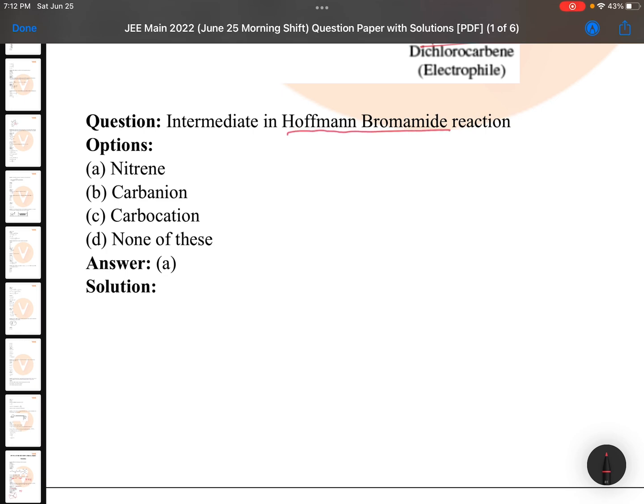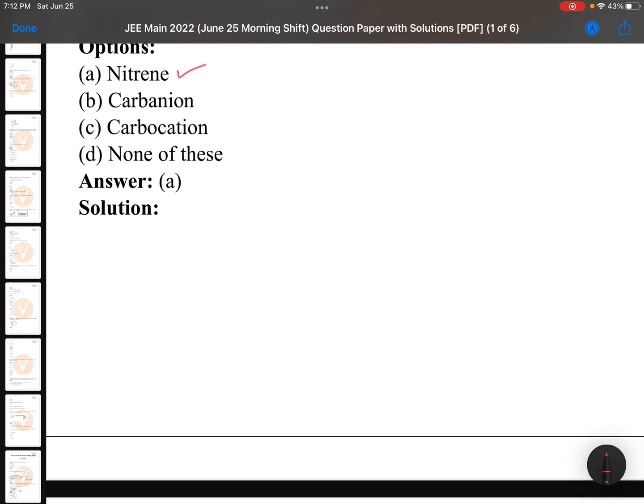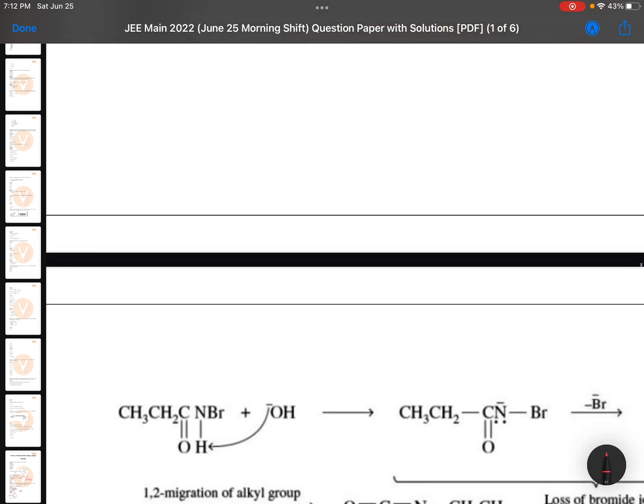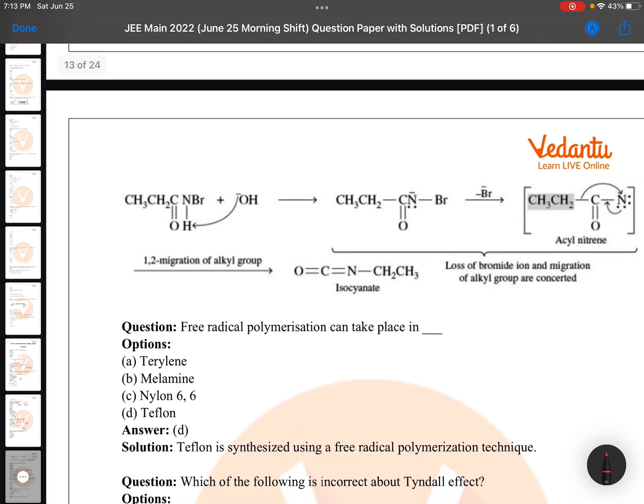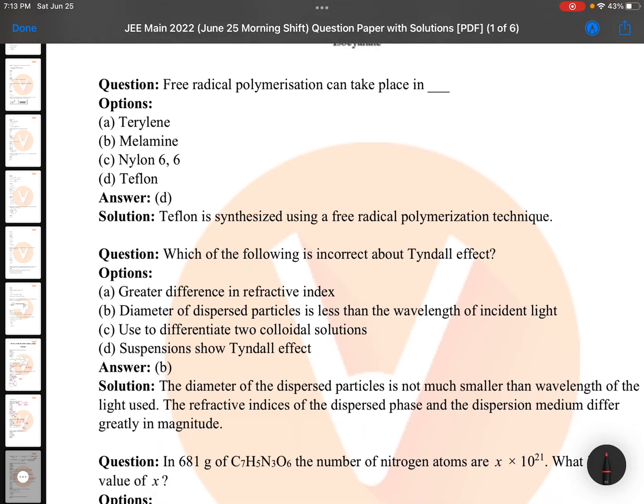Hoffmann Bromamide reaction intermediate: This is not expected actually - nitrene. Not very tough one, but students if you didn't answer this we can consider little bit, but carbanion you must answer. Nitrene because Hoffmann Bromamide reaction is little typical, not very clear mechanism. You can see there is nitrene, so nitrene is the intermediate in Hoffmann Bromamide reaction. Now you can remember for long time.